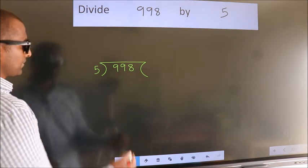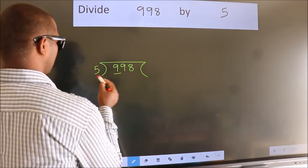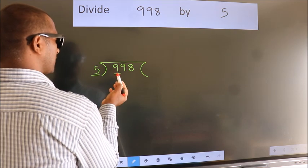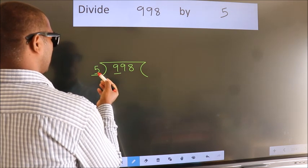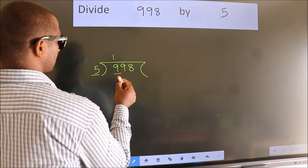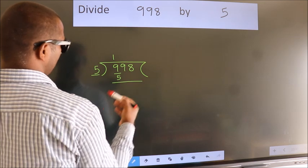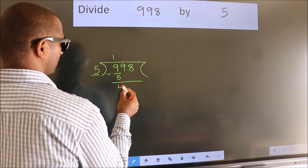Next. Here we have 9, here 5. A number close to 9 in 5 table is 5 once 5. Now, we should subtract. We get 4.